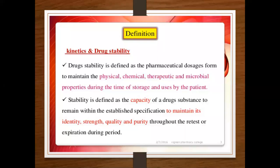Today we are going to discuss UV light and its effect on drug stability. Drug stability is defined as the ability of a pharmaceutical dosage form to maintain its physical, chemical, therapeutic, and microbial properties during storage and use. It is the capacity of a drug substance to remain within established specifications, maintaining its identity, strength, quality, and purity throughout the expiration period.